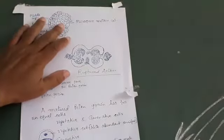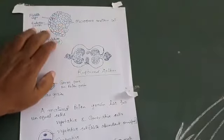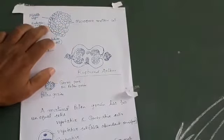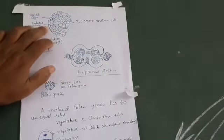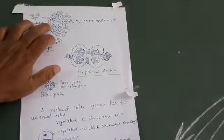Here is the transverse section of an anther. You can see the outermost layer, which is the epidermis. Just below the epidermis is the layer of endothesium.